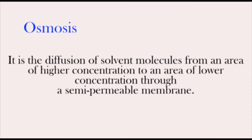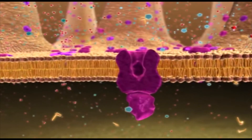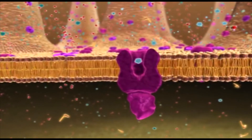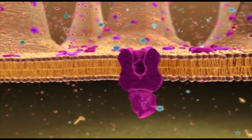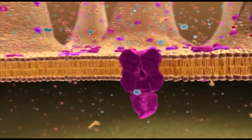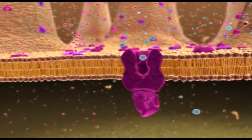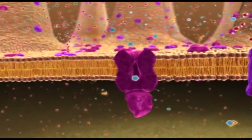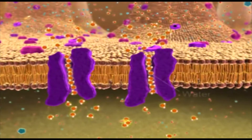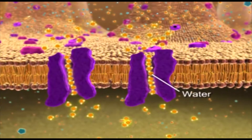Another type of passive transport is osmosis. Osmosis is the diffusion of a solvent from its high concentration to its low concentration through a semi-permeable membrane. Water, a universal solvent, moves from an area of its high concentration to an area of its low concentration. Water moves in or out of a cell until its concentration is the same on both sides of the plasma membrane.